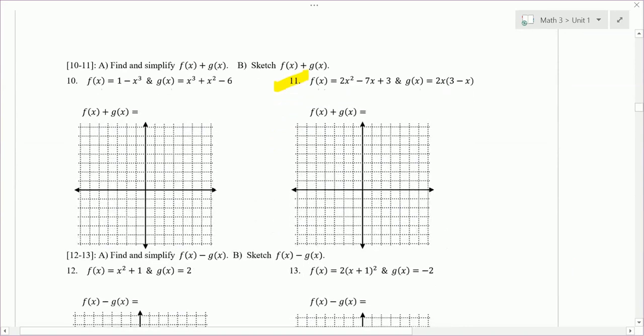Last one I want to do with you is number 11. The instructions are to find and simplify f of x plus g of x and then sketch it. When you add the two functions together, you'll get a third function. We have f is 2x squared minus 7x plus 3, and we want to add that with g, which is 2x times 3 minus x. The first thing we're going to have to do is distribute the 2x with 3 minus x. We end up with the 2x squared minus 7x plus 3 plus 2x times 3 is 6x, and 2x times negative x is negative 2x squared.